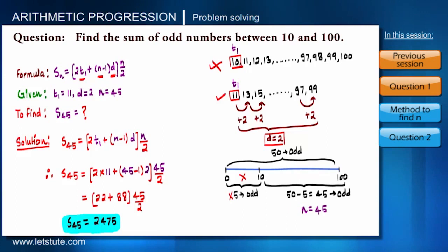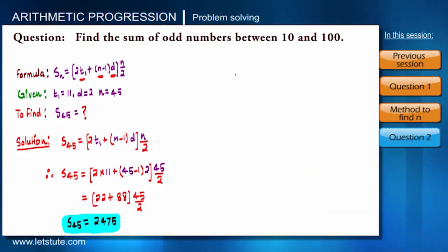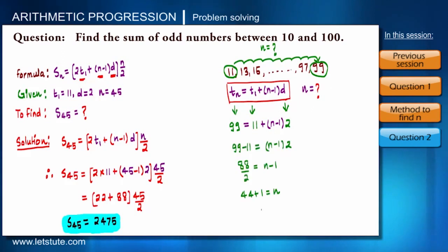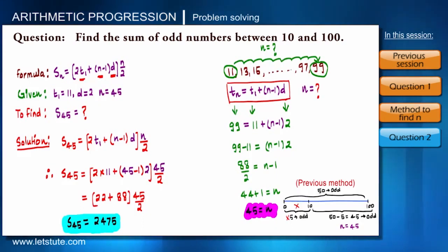Let me tell you one more thing. We can also find the value of N by using our first formula TN. The first number is 11 and the last number is 99, so this formula will tell us how many numbers are there to reach from 11 to 99. So instead of TN we will write 99, and that can be written as 99 equals 11 plus N minus 1 into 2, and then the value of N will be 45. So now you have two ways to get the value of N.